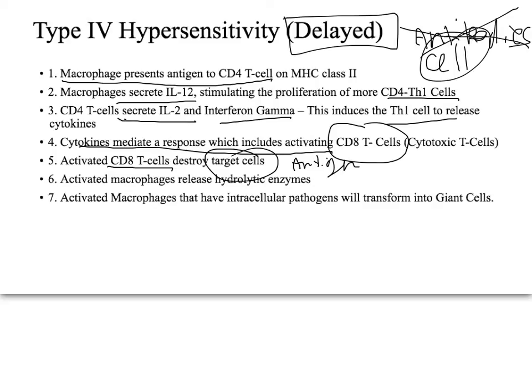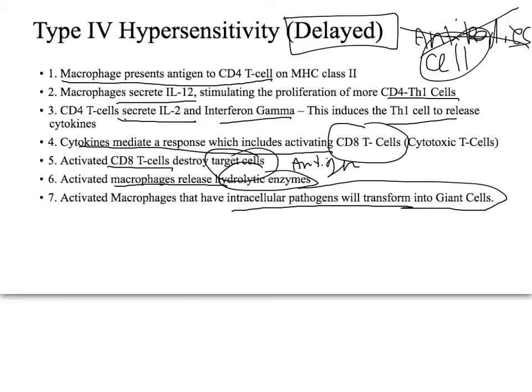Macrophages get involved as well. Activated macrophages release hydrolytic enzymes, and in some cases — particularly with tuberculosis — macrophages with intracellular pathogens can transform into giant cells.